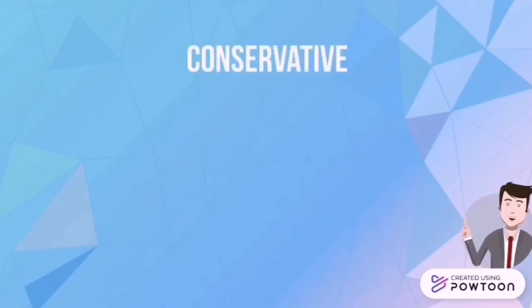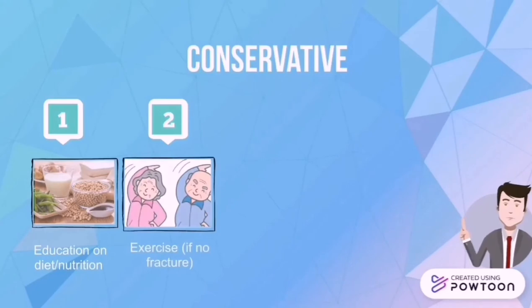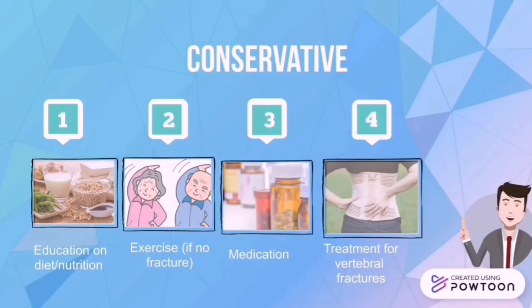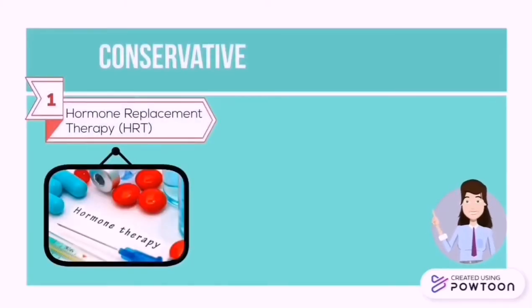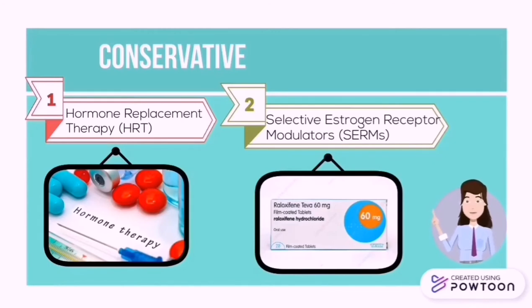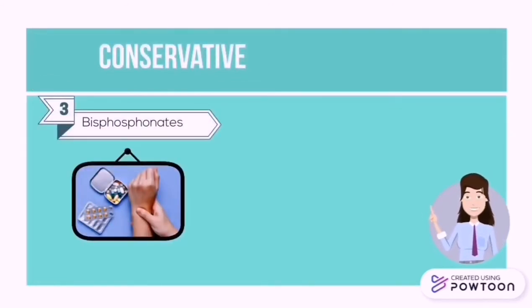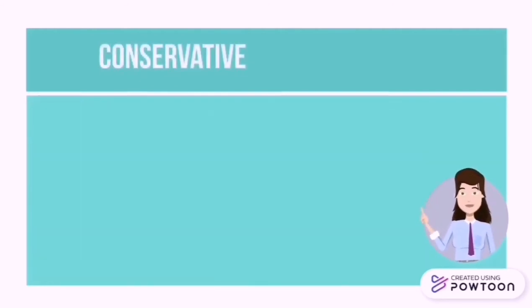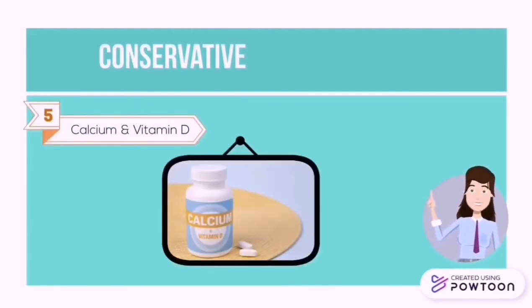Conservative management may include education on diet and nutrition, exercise — if no fracture — to help maintain bone density and reduce the risk of falls, and medication to slow bone loss, prevent fractures, and treat vertebral fractures. Hormone replacement therapy is beneficial in the prevention and treatment of post-menopausal osteoporosis, while selective estrogen receptor modulators improve and preserve bone density at both the spine and hip. Bisphosphonates are potent inhibitors of bone resorption, and calcitonin reduces vertebral fractures and has an analgesic effect for acute pain relief in osteoporosis-related fractures. Vitamin D supplementation in combination with calcium has been shown to reduce fractures in elderly populations with vitamin D deficiency.